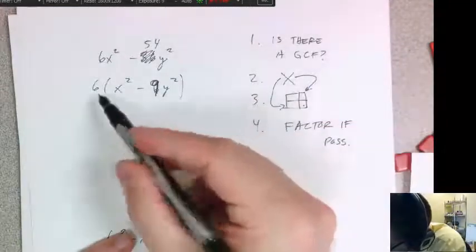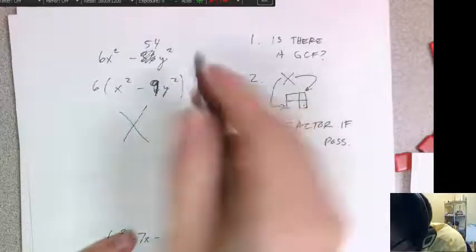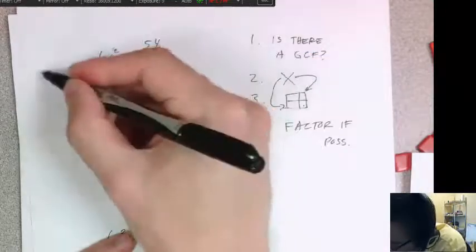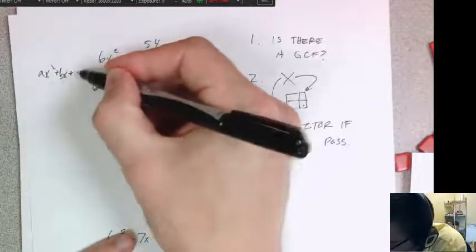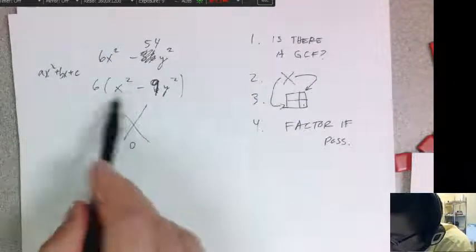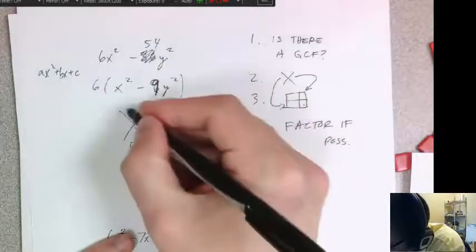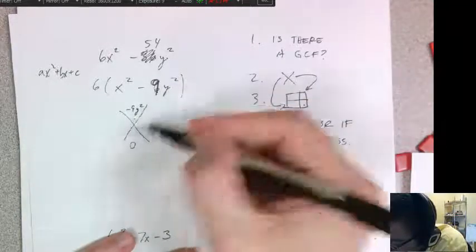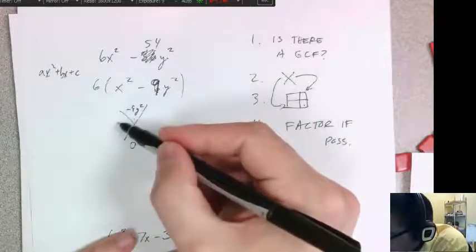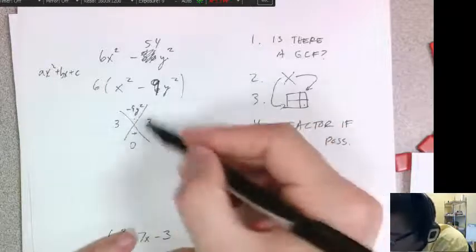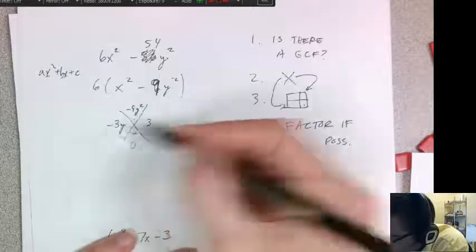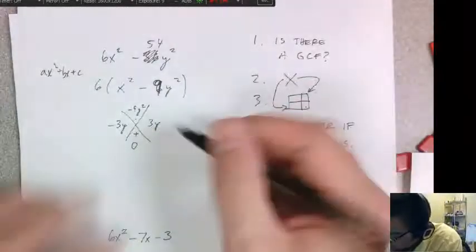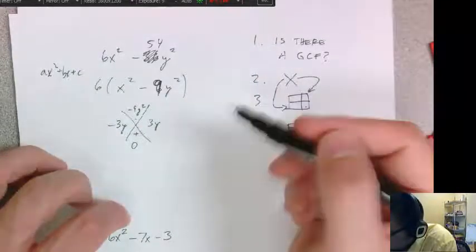So I factored out my GCF. Now I'm going to do my big x. So it's the first and last term. And because there is no x term, it's just zero. So zero goes on the bottom as my b, as my ax squared plus bx plus c. There is no b term, so it's just zero. A and c is 1 and negative 9y squared, which would just be negative 9y squared. So what do I multiply to get negative 9y squared, but when I add, it's zero. So how about 3 times 3 is 9, right? So 3 and 3. And one of them has to be negative to make a negative 9. So let's just make that one. And then also, y times y is y squared. So negative 3y times positive 3y would be negative 9y squared. And then when I add them together, negative 3y plus 3y would be zero. So that checks out.